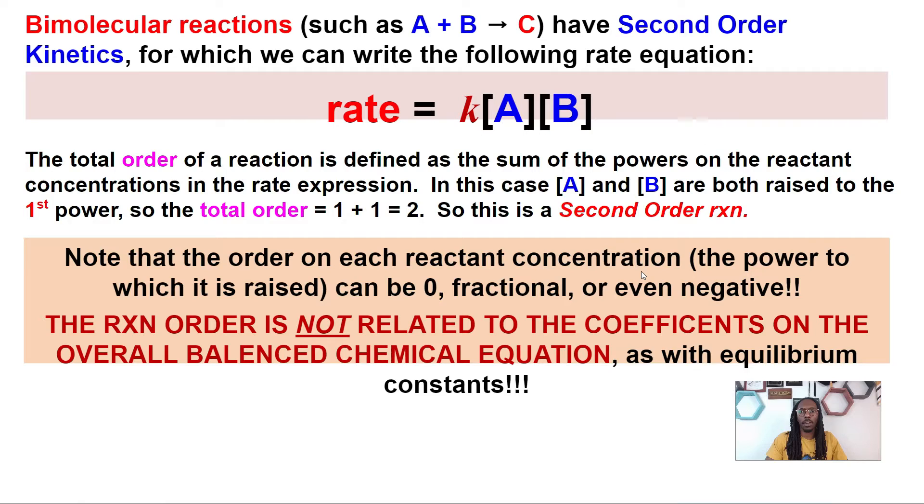The order on each reactant of the concentration, so that's the power thing. In this case, it raises to one and one. We've only been talking about zero, one, and two. Now it is possible to have a fraction or negative. We're not going to get in detail with that on this video here, but it is possible. And then once again, we don't want to relate our coefficients to our orders. We're not relating those two.